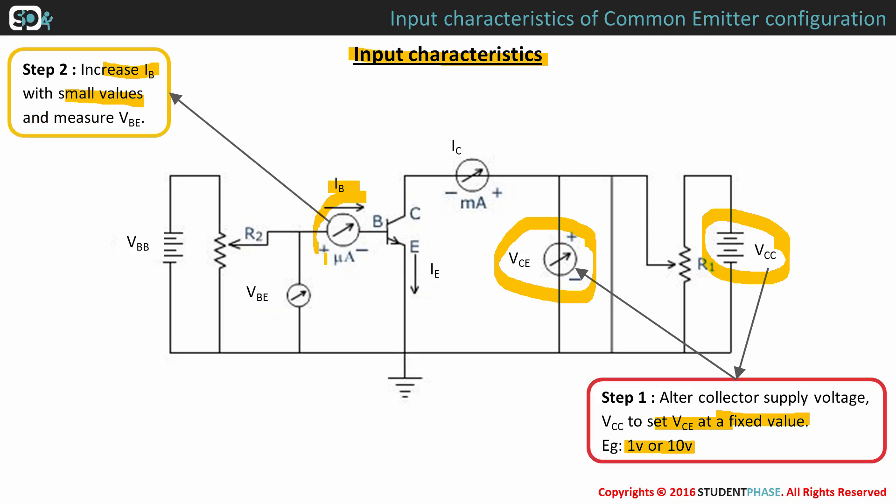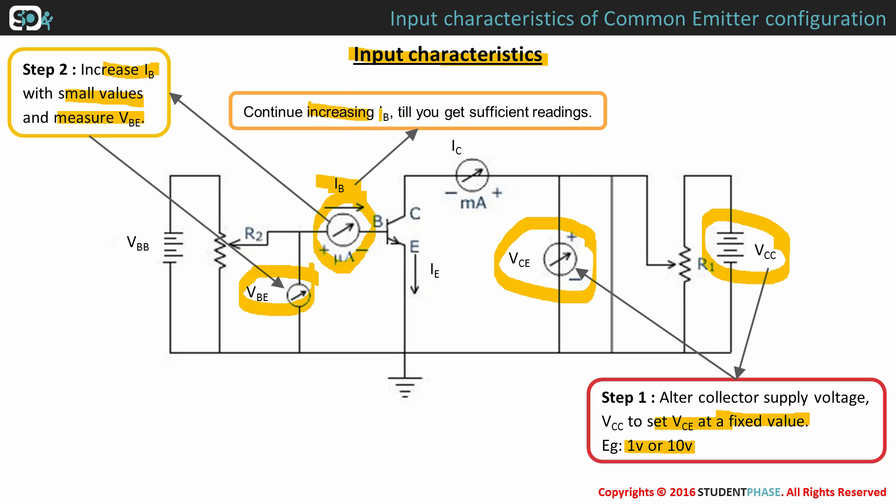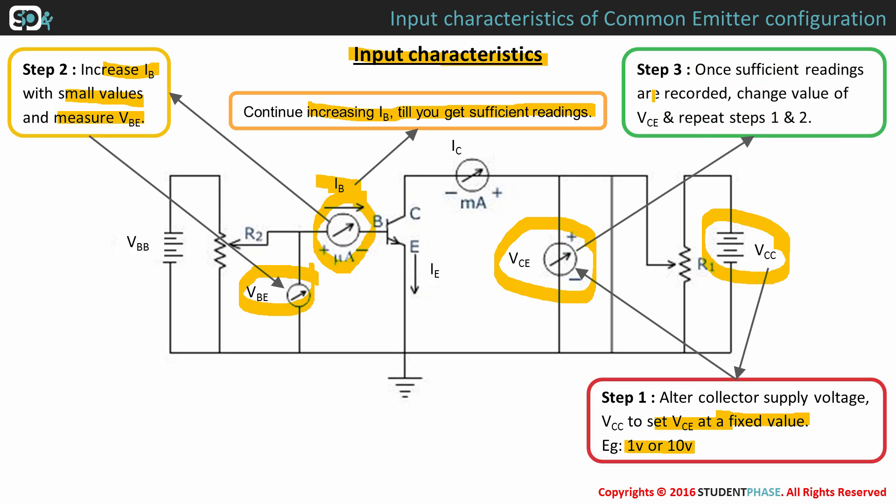Record the measure of base emitter voltage VBE. Continue increasing IB till you get sufficient readings. Once you get sufficient readings, change value of collector emitter voltage VCE and repeat steps 1 and 2.